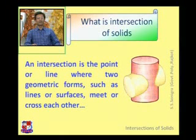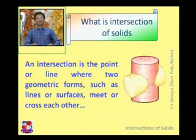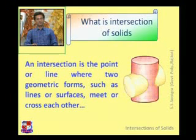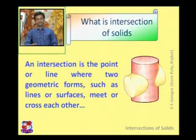Now, what is interpenetration? Interpenetration means one solid penetrates inside another solid. Here the vertical cylinder is penetrated by a horizontal cylinder. So this yellow colored cylinder is the penetrating cylinder and the red colored cylinder is the penetrated cylinder. The vertical cylinder is cut while the horizontal cylinder remains throughout solid.